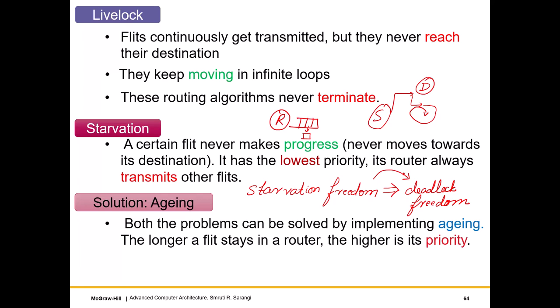Both starvation and livelock can be solved by implementing a version of aging, which basically says the longer a flit stays in a router, the more you increase its priority. Jacking up its priority means that instead of taking alternative routes to avoid congestion, it takes as straight a route as possible — the shortest path to the destination — which prevents livelocks. And since its priority is high because it has waited so long, it also prevents starvation.